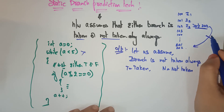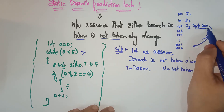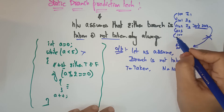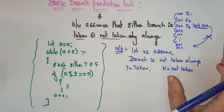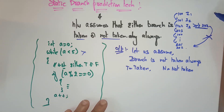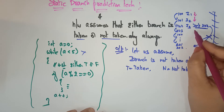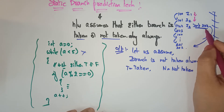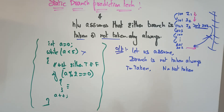Branch not taken means we do not jump to address 202. Instead, the next instruction is taken in sequence — going to 103, 104, and so on. At the end it checks whether the condition was satisfied or the expected output was obtained. If not, it completely flushes out the program, starts processing again from instruction one, and this time when it reaches instruction three it takes the branch.